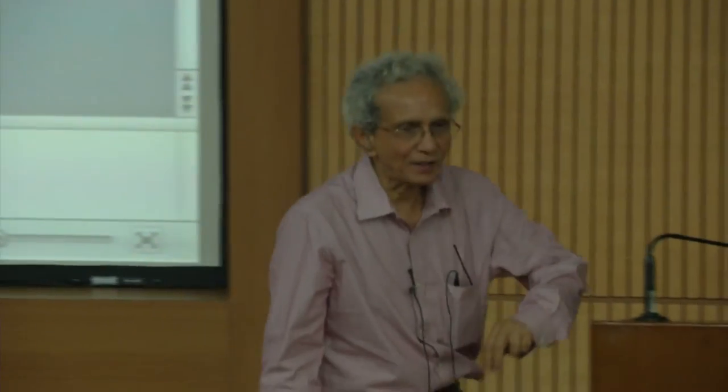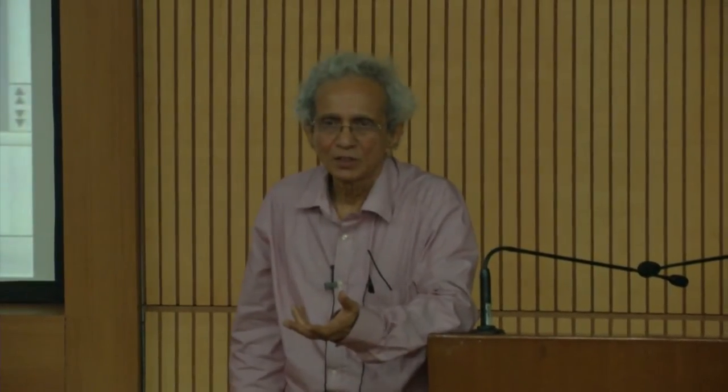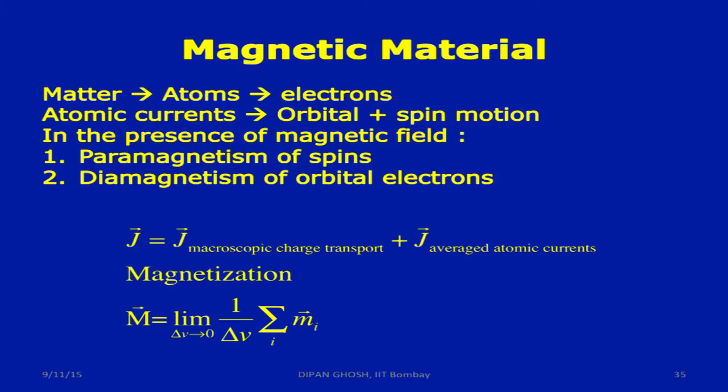That is the macroscopic charge transport. That is one part of the current. A second part of the current lies within it. There are these atomic currents. What I look for is an average atomic current, because there are a large number of such currents which have to be added up.